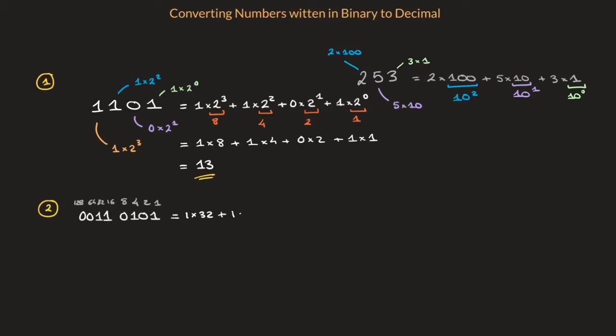Plus 1 times 16. So I'll write that. That's 1 times 16. I add to that 0 times 8, which is just 0, so we don't need to write anything there. Plus 1 times 4. So I'll write that one. That's plus 1 times 4. Plus 0 times 2, which is 0, so we don't bother writing it.